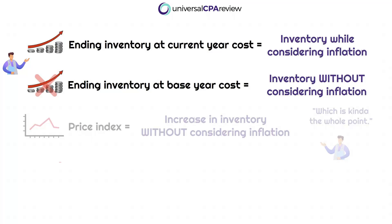Current year cost is valuing inventory as we normally would — that is, while considering the inflationary impact. Whereas valuing inventory at the base year cost is just the opposite: inventory valued without considering inflation. When you see inventory valued at base year cost, you're thinking inventory valued without inflation. This is what we really need to focus on, because making this determination will require extra math — we're essentially backing out that inflation.